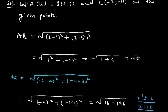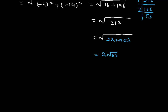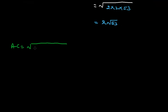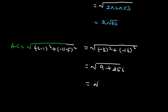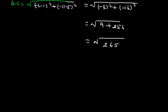Now we shall find the distance between points A and C. AC equals the square root of (-2 minus 1) squared plus (-11 minus 5) squared, which equals (-3) squared plus (-16) squared. If we further solve it, this equals 9 plus 256. Adding 9 to 256 gives us 265. Now we shall factorize 265 using the prime factorization method.